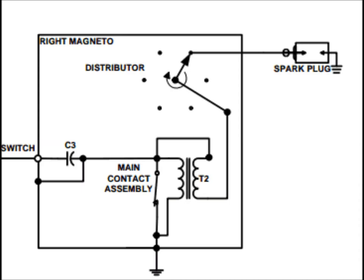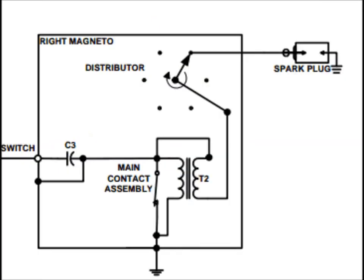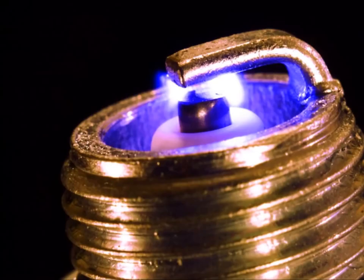The collapsing magnetic lines of flux cut across into the secondary coil. The secondary coil has a far greater number of turns, meaning that the induced current is of much higher voltage. The current is then routed to a distributor where it crosses a small air gap, travels down a lead, and creates a spark inside the combustion chamber.